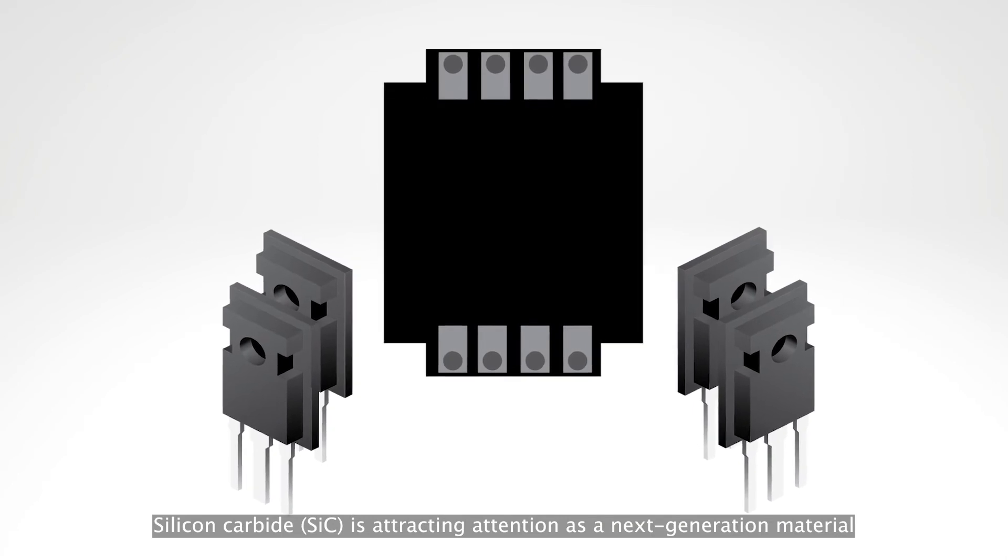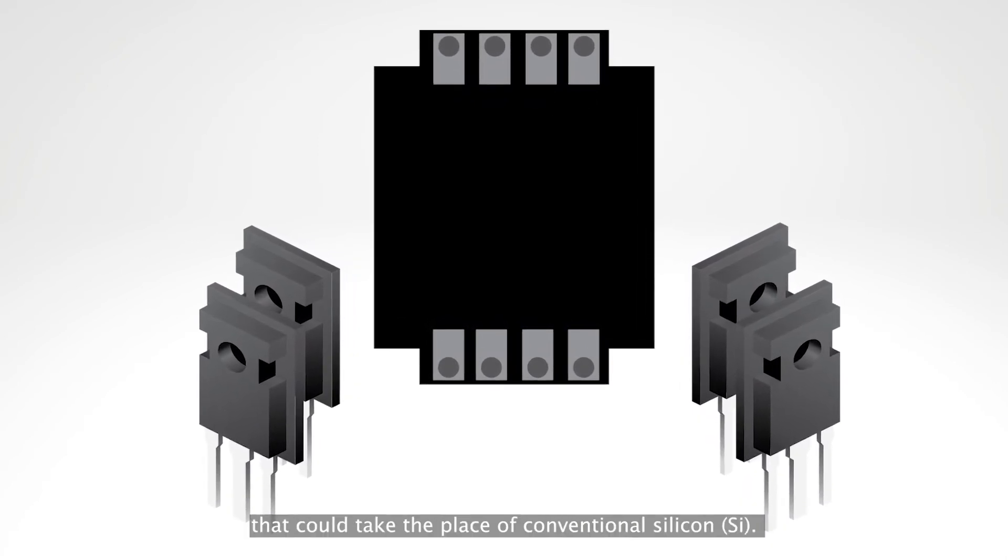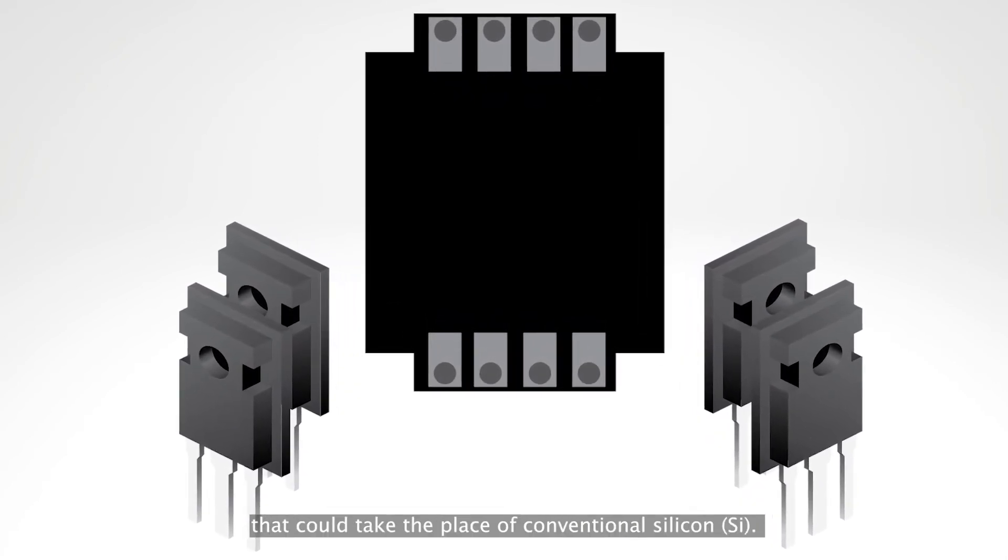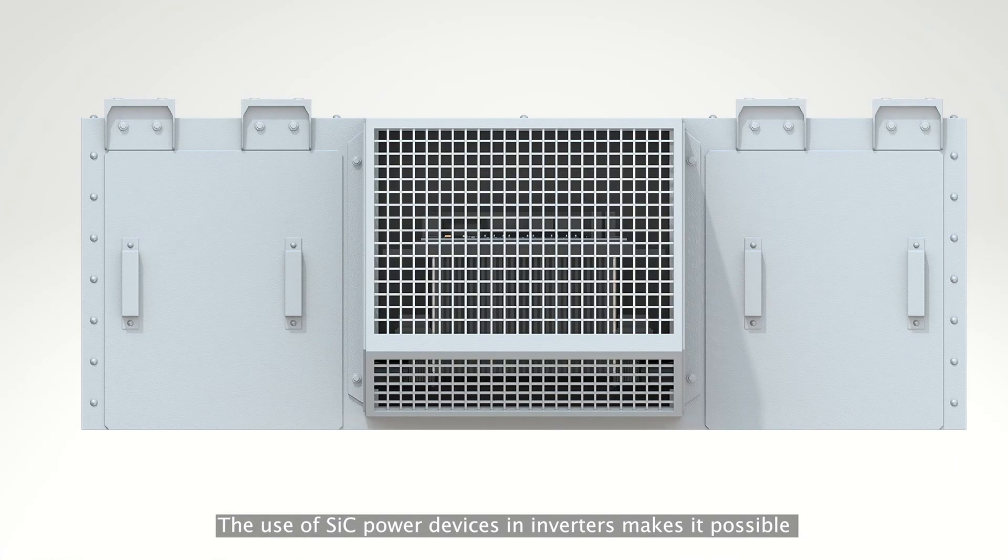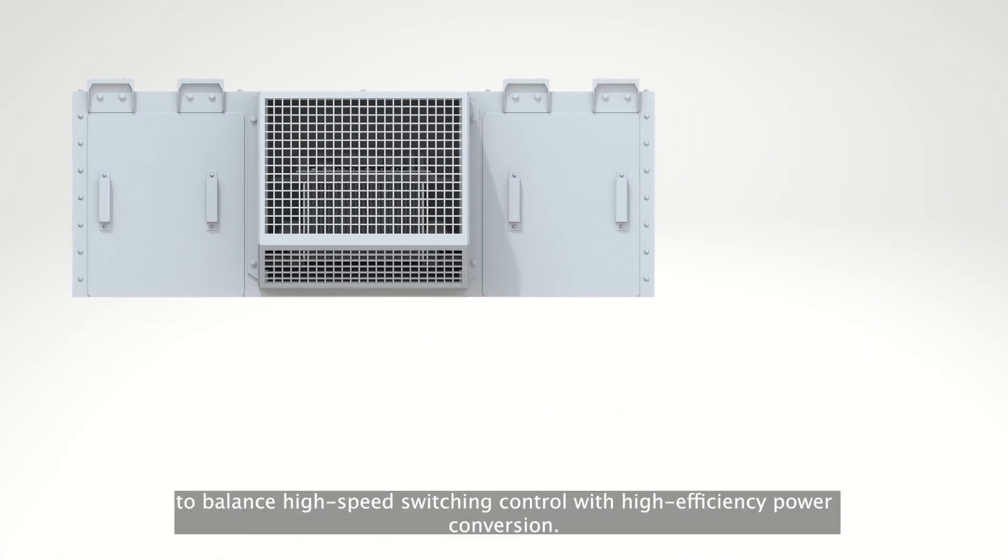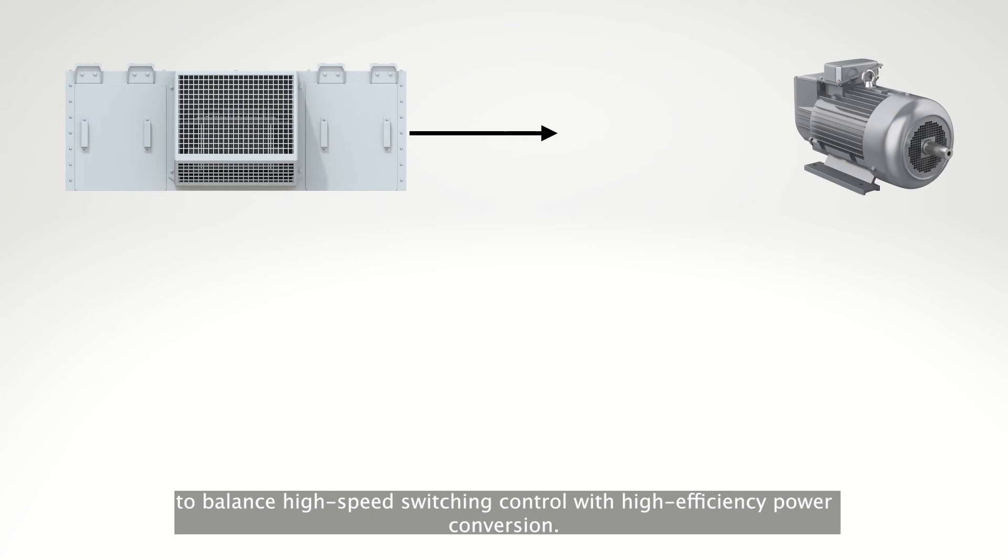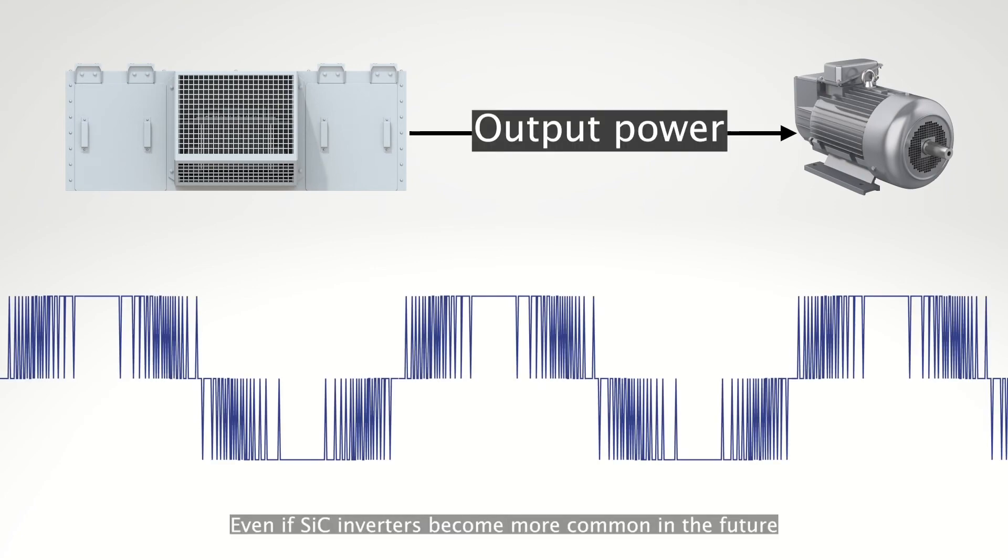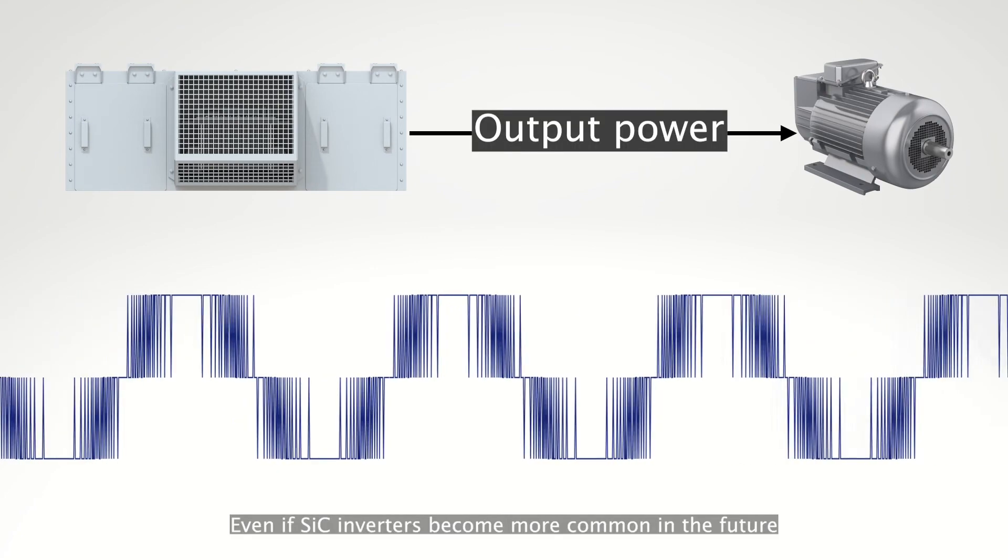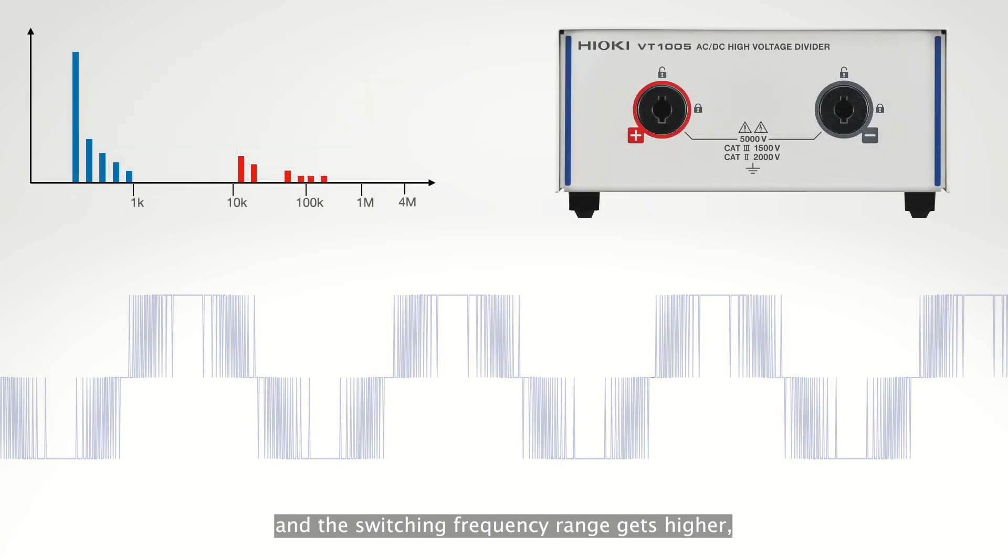Silicon carbide is attracting attention as a next generation material that could take the place of conventional silicon. The use of SiC power devices in inverters makes it possible to balance high speed switching control with high efficiency power conversion. Even if SiC inverters become more common in the future and the switching frequency range gets higher, the VT1005's frequency bandwidth will still let it measure efficiency correctly.